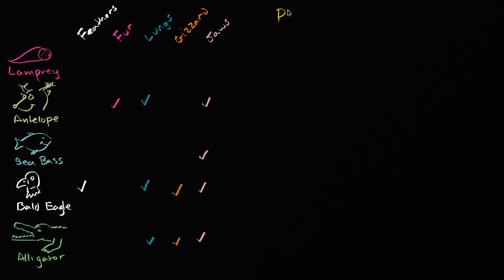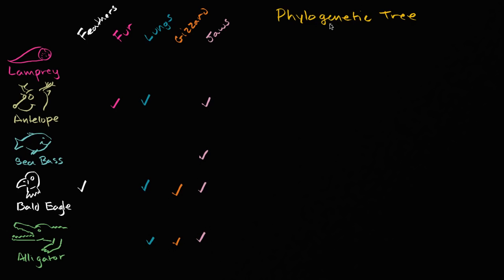So let me write this down — that's what we're going to create: a phylogenetic tree. Phylo comes from the Greek for group, kind, or tribe, and genetic comes from the word genesis — how do these things come about? How do the different groups, or in this case, how do the different species come about?